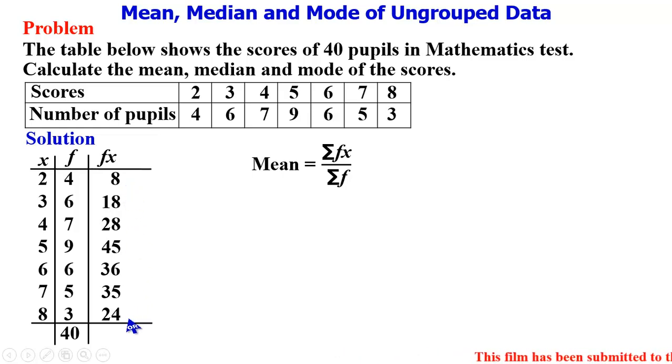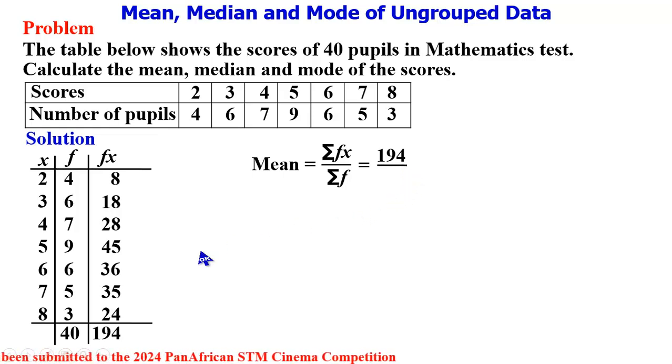If you input this in your calculator, you have 194. So we then substitute into this formula so that we now have it as sigma fx to be 194, then divide by sigma f, which is 40.